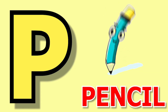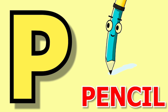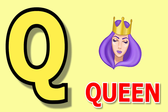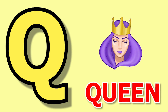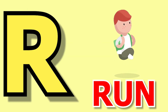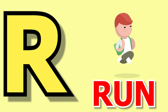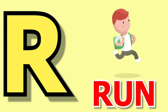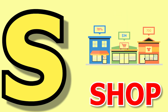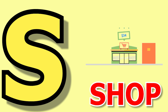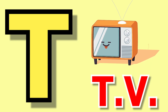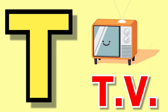P for pencil, pencil means lekhni. Q for queen, queen means rani. R for run, run means dodna. S for shop, shop means dukan.